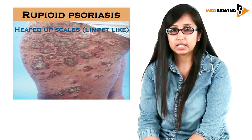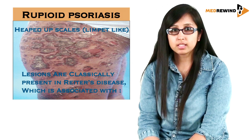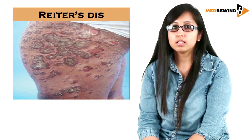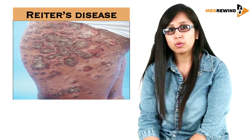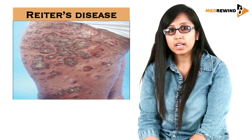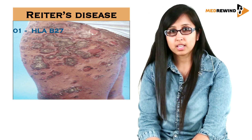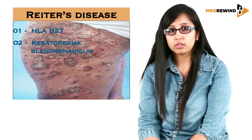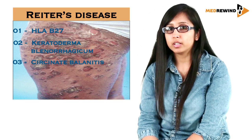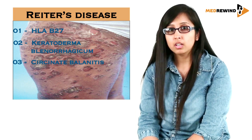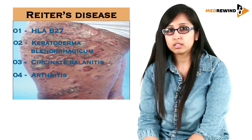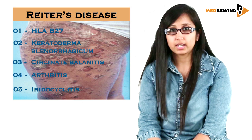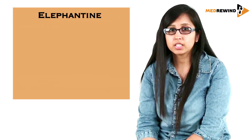The second type is rupeoid psoriasis, in which there are thick limpet-like scales. This type of psoriasis is also characteristically present in Reiter's disease. Regarding Reiter's disease, it is associated with HLA-B27, which is very characteristic. The skin lesions in this disease are keratoderma blenorrhagicum, and on the glans it manifests as circinate balanitis.